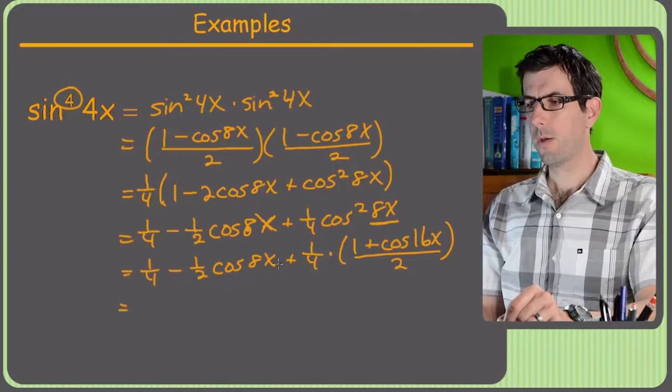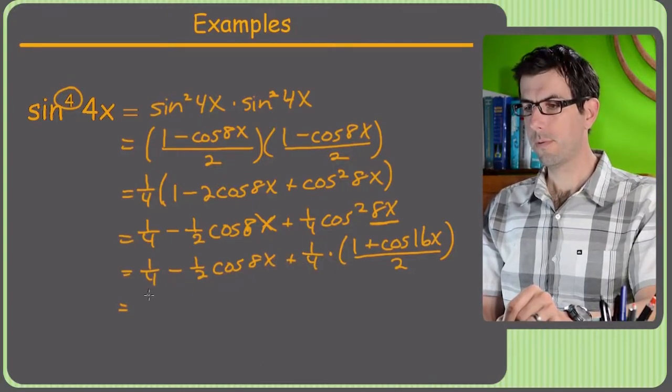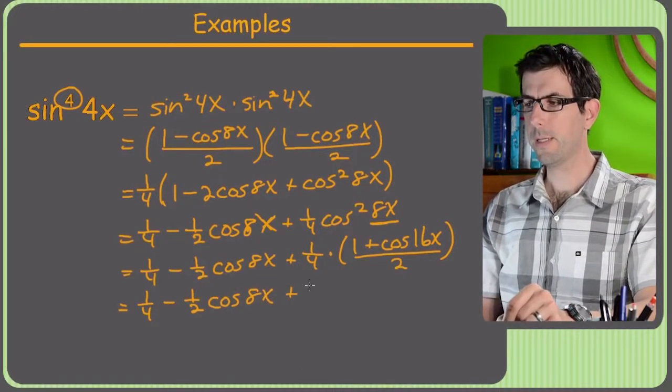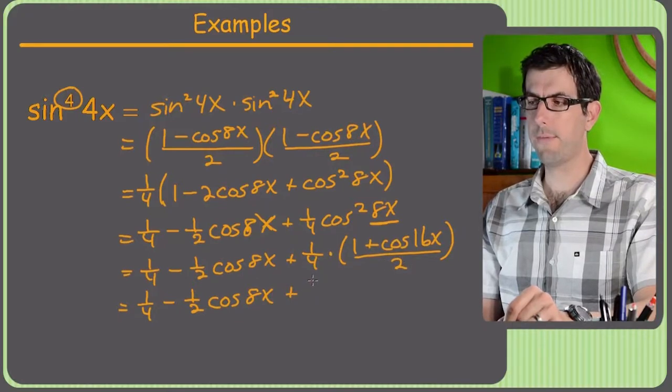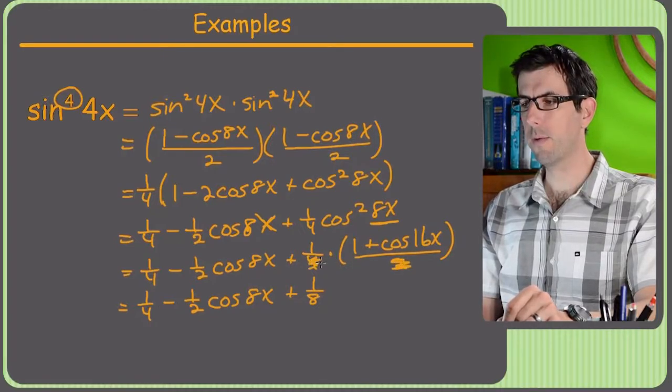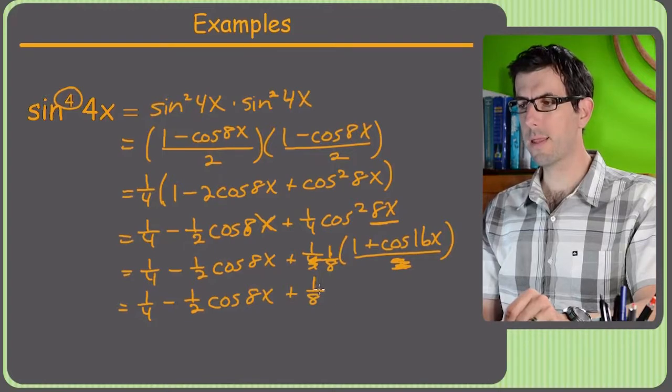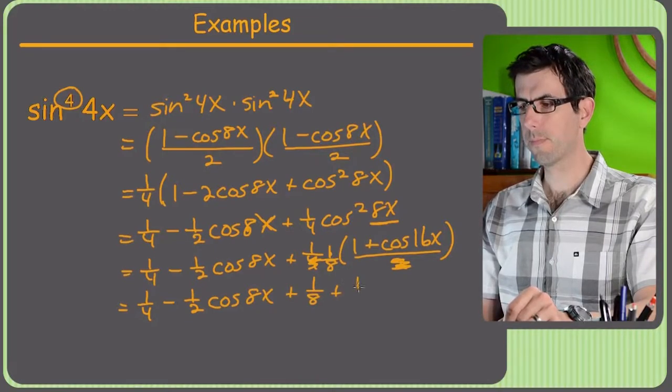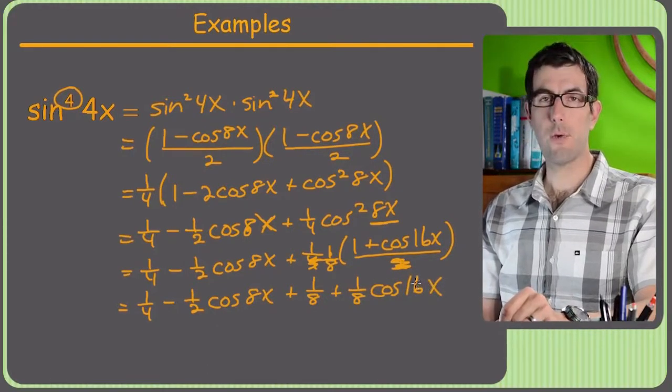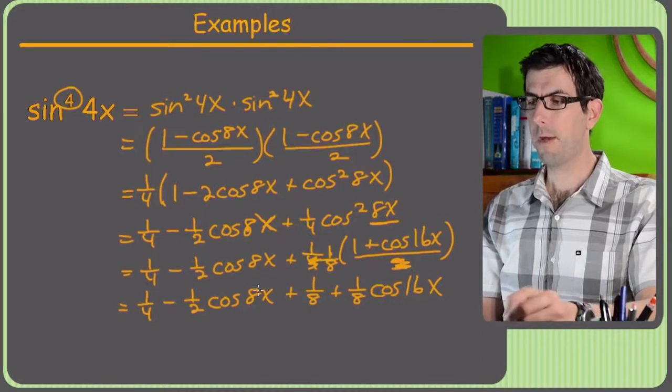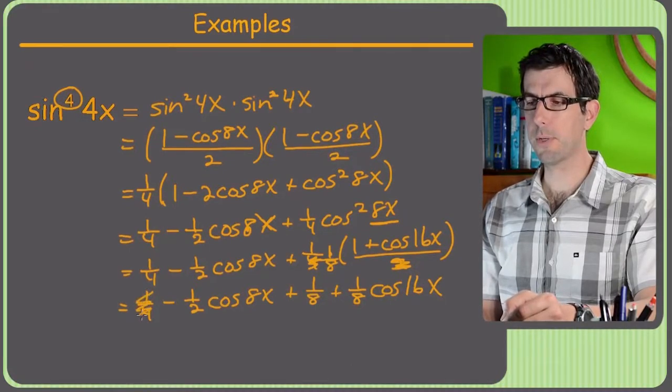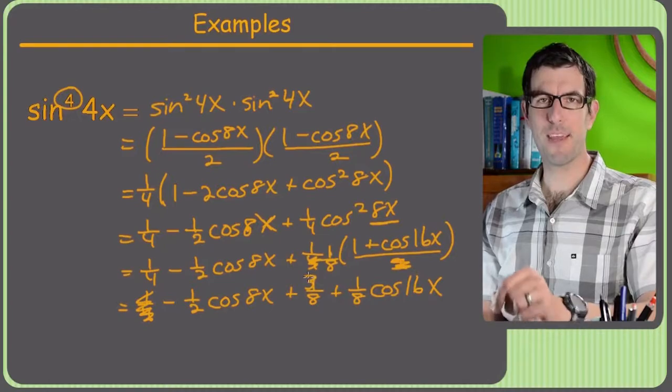All right. So this is going to be 1 fourth cosine 8x plus. Now 1 fourth, and then this 2 down here is really just like a 1 half. So that means we've got a 1 eighth. Sort of combine this and get 1 eighth. So 1 eighth times 1 is 1 eighth. And then plus 1 eighth cosine 16x. So now our work is sort of done as far as reducing the exponents. But the last little thing we could do here is combine the 1 fourth and the 1 eighth into, make them 3 eighths. So maybe I'll scribble that out and put a 3 here because you know what a fan I am of messiness.